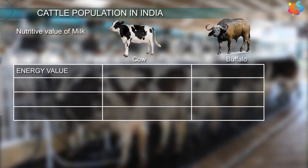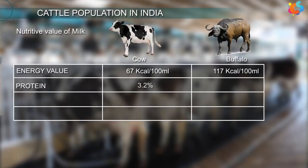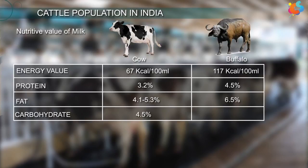Regarding the nutritive value of milk: the energy value for cow milk is 67 kcal per 100 ml, whereas for buffalo milk it is 117 kcal per 100 ml. Protein content is 3.2% in cow milk and 4.5% in buffalo milk. Fat is 4.1–5.3% in cow milk and 6.5% in buffalo milk. Carbohydrates are 4.5% in cow milk and 5.0% in buffalo milk.